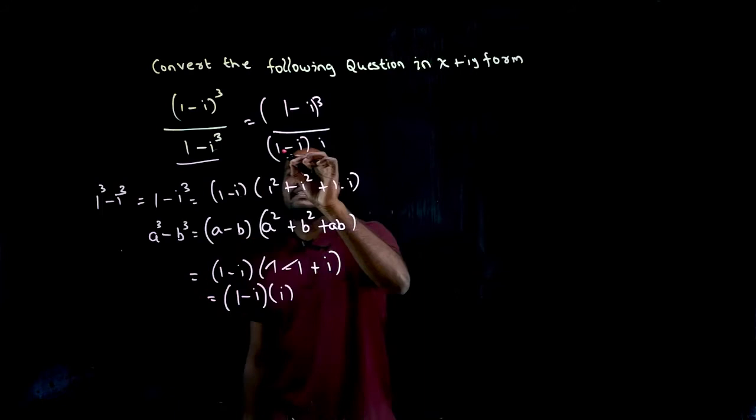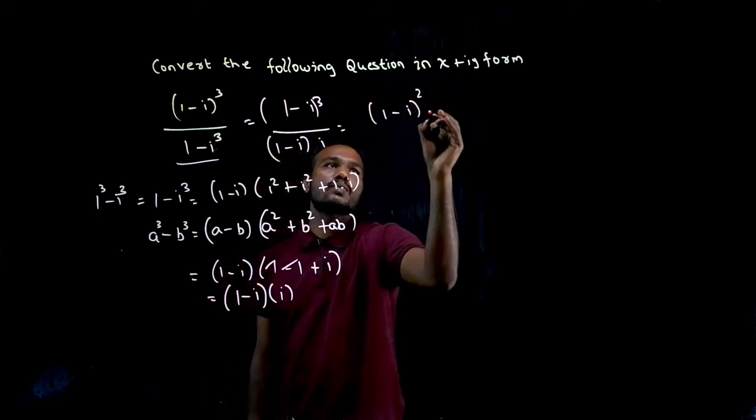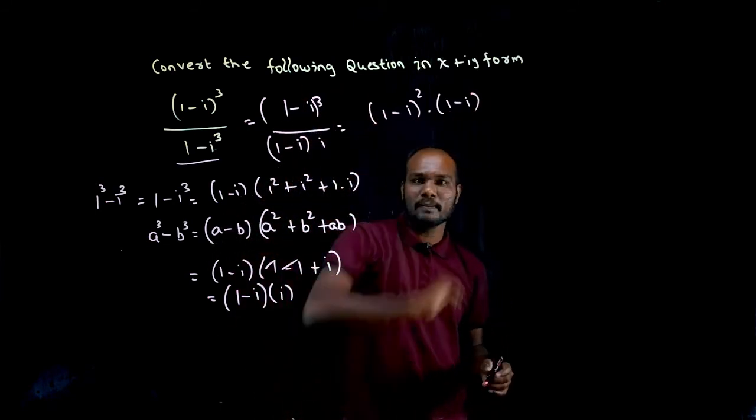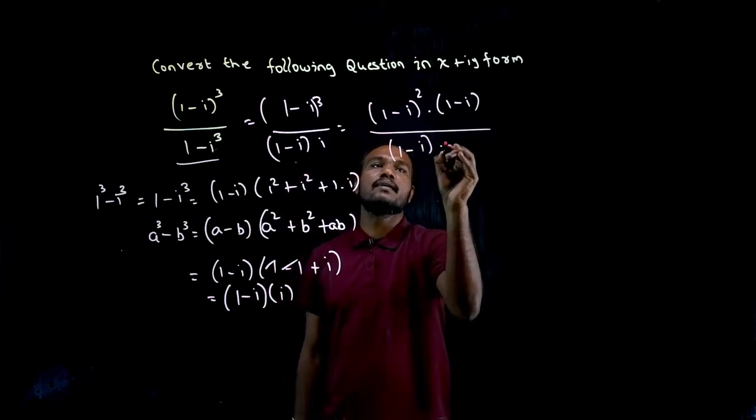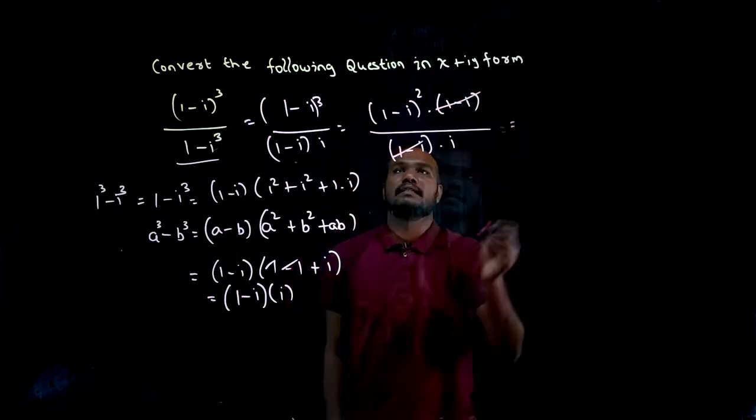Again you can see here, (1-i)³ can be written as (1-i)² times (1-i). The denominator I have (1-i) times i, so (1-i) cancels. What did I have?